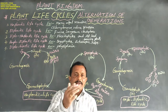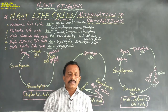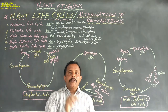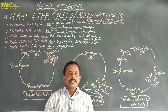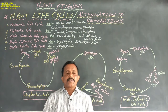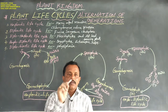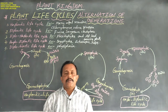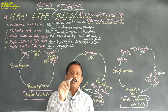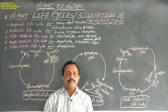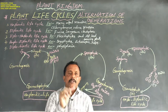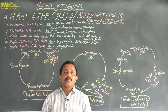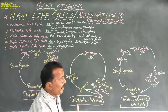In angiosperms, the plant life cycles are of 5 types. They are namely: first one, haplontic life cycle; second one, diplontic life cycle; third one, haplo-diplontic life cycle; fourth one, haplo-diplontic life cycle; fifth one, diplo-haplontic life cycle.